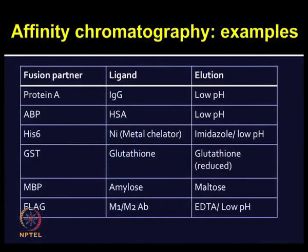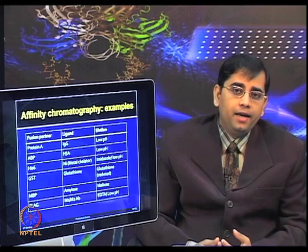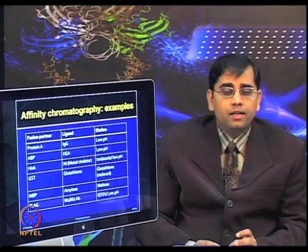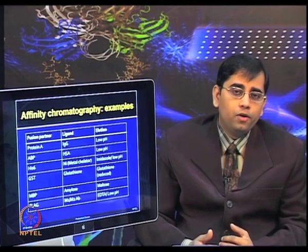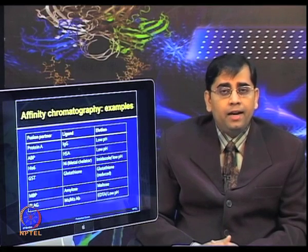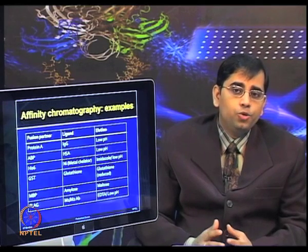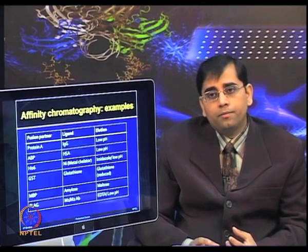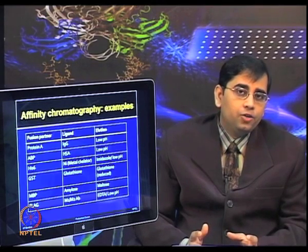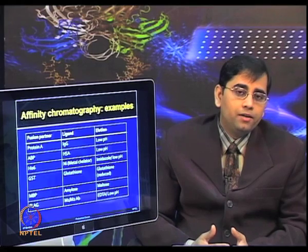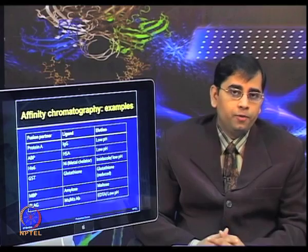Various examples of affinity chromatography include antigen-antibody pairs as bioaffinity pairs. Protein A is used for IgG purification — Protein A recognizes the Fc region of IgG. Another strategy: concanavalin A binds to glucose molecules, and by adding a concentrated glucose solution, glucose can displace the concanavalin A binding site. There are many other examples where different fusion partners and ligands are used for affinity chromatography, as shown in this slide.